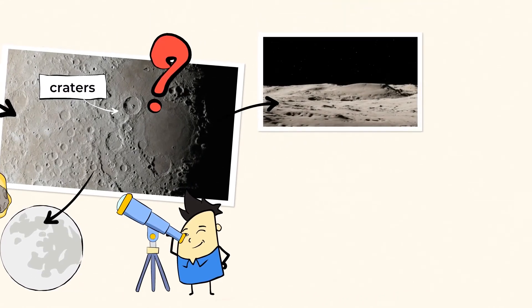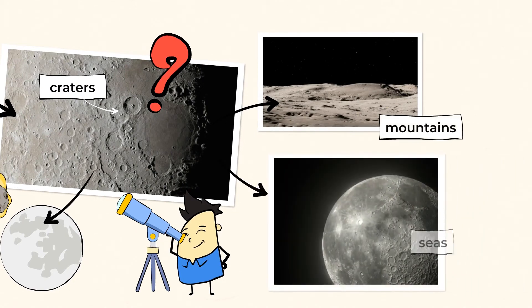There are also tall mountains and flat plains called seas. These seas certainly are not like the seas on Earth. No water here.